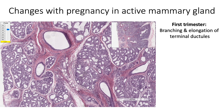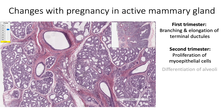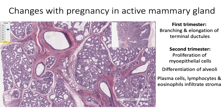In the second trimester, we see proliferation of myoepithelial cells. The terminal part of the ductules shows differentiation to form alveoli. Plasma cells, lymphocytes, and eosinophils infiltrate the stroma. In the third trimester, the alveoli mature to become functionally competent so that they start secreting milk.